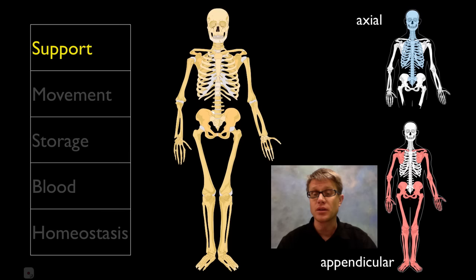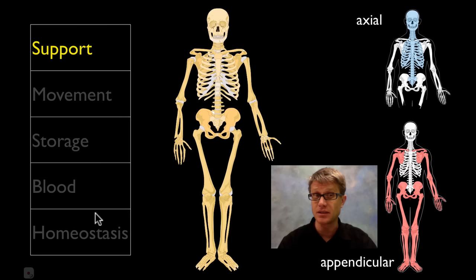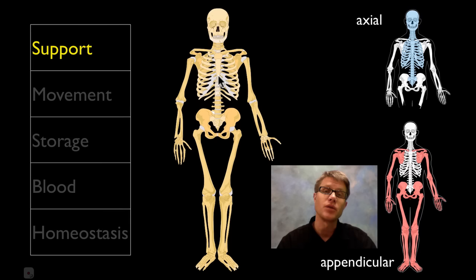What's the function of the skeletal system? It's going to be support, movement, storage, blood production, and homeostasis. The function of our skeleton is to support us — it holds us up and it also offers protection. I wouldn't be able to stand upright if it weren't for my endoskeleton. It also protects vital organs; for example, the skull is protecting my brain, and the rib cage is protecting my organs in my thoracic cavity.